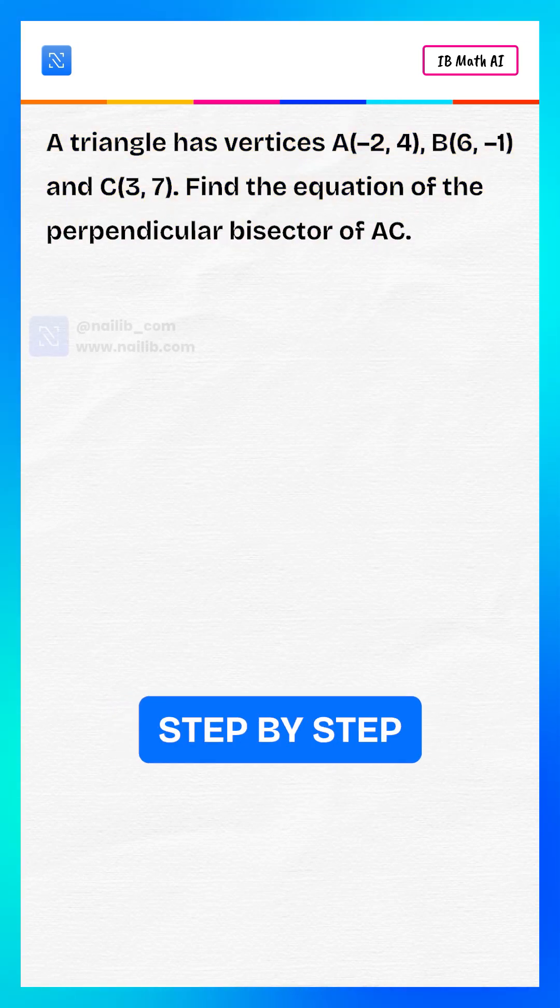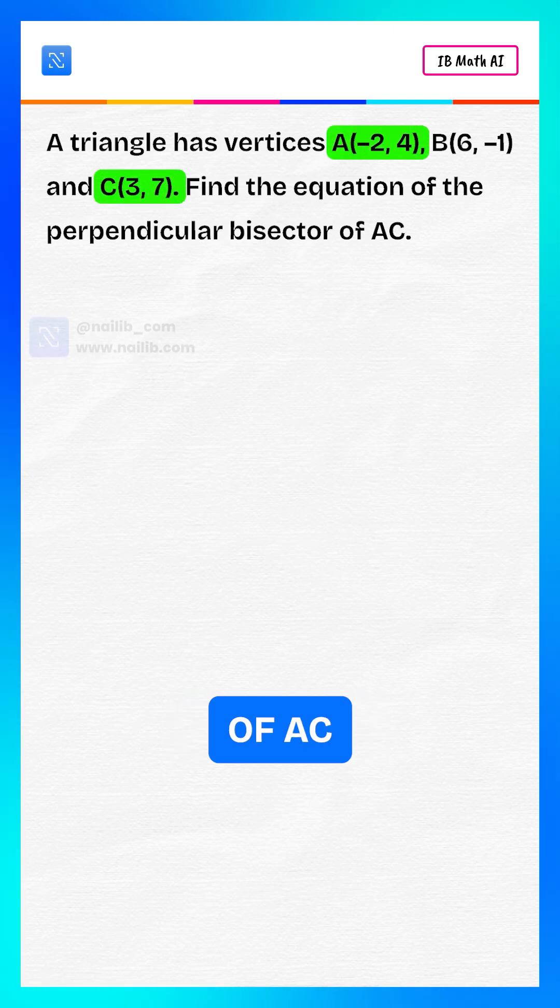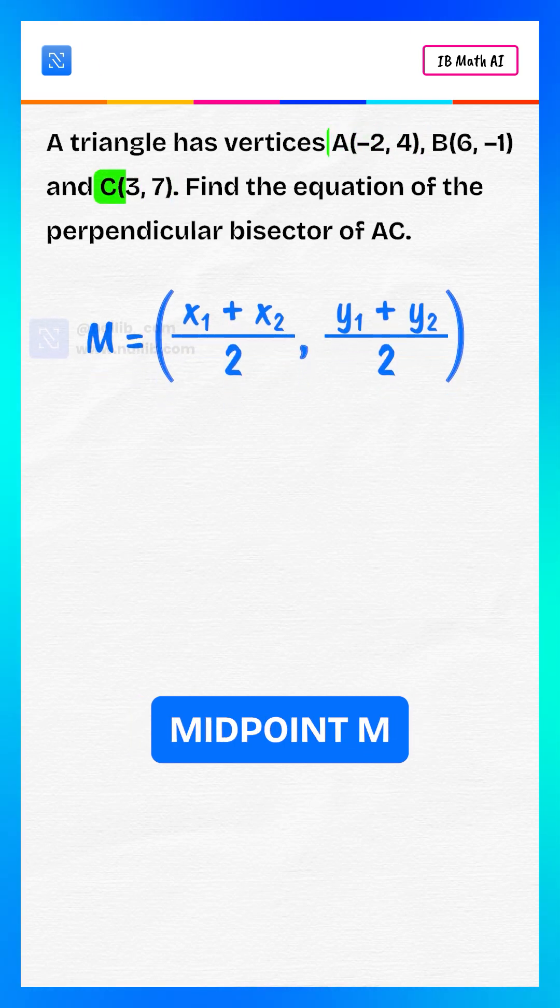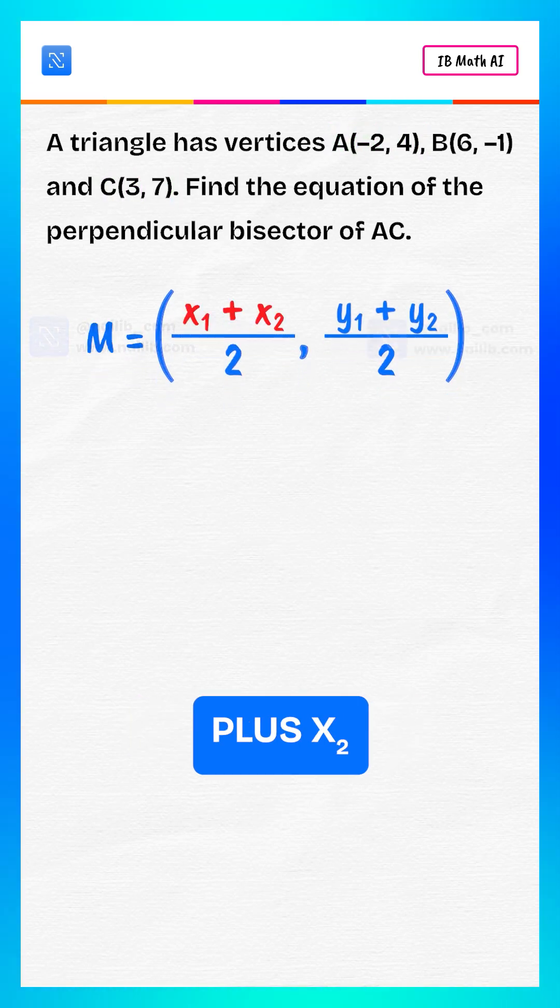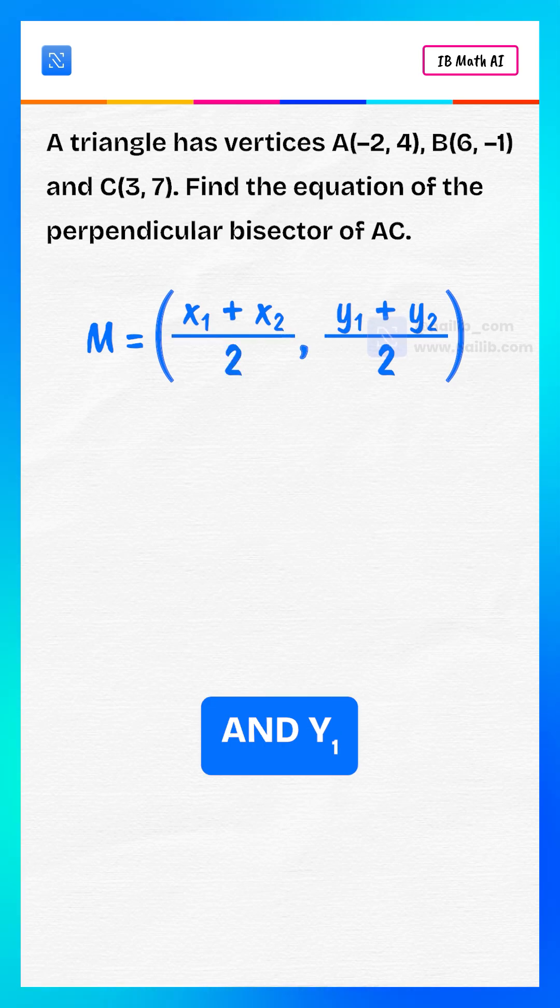Let's solve step by step. For the midpoint of AC, we use the formula midpoint M equals (x1 + x2)/2 and (y1 + y2)/2.